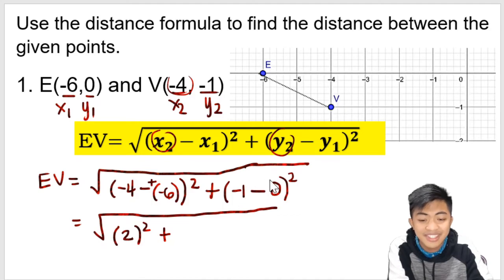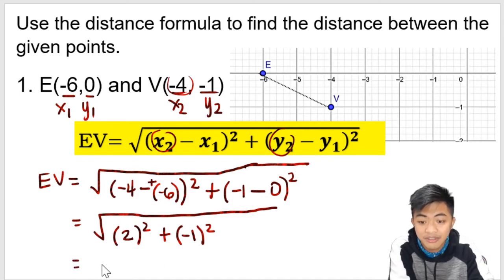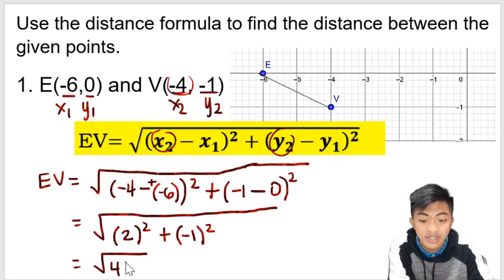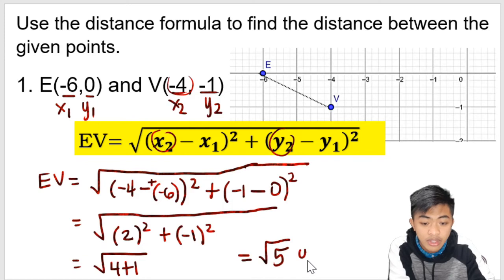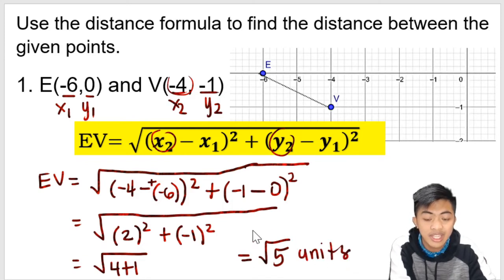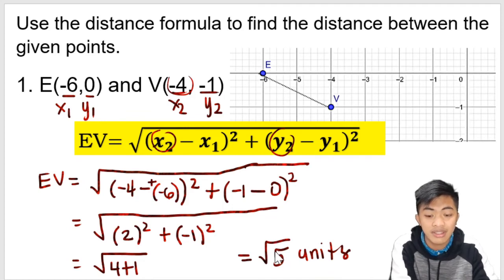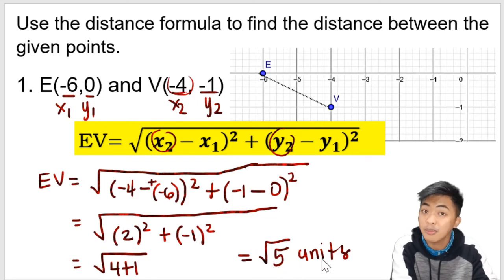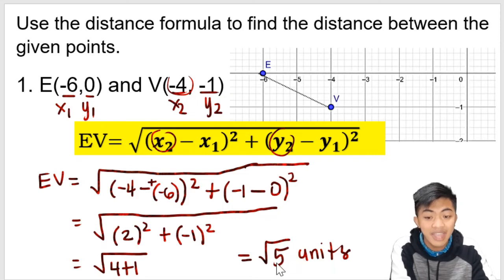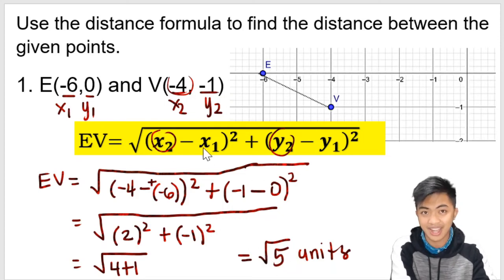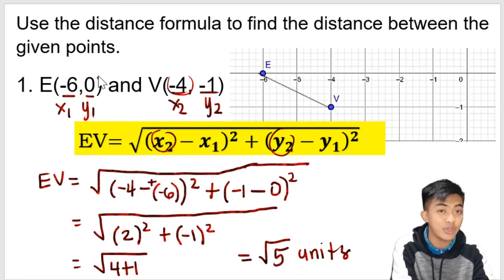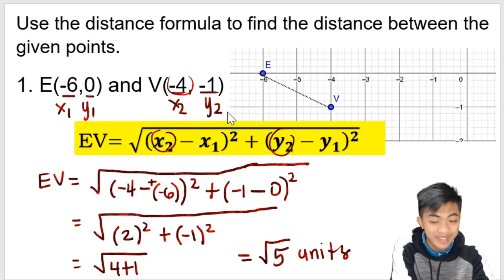Now we simplify: −4 minus −6 becomes −4 + 6 = positive 2, squared; plus −1 minus 0 = −1, squared. So 2² = 4 and (−1)² = 1, giving us 4 + 1 = 5 under the square root. The final answer is √5 units, which is approximately 2-point-something. That is how we use the distance formula to determine the distance between two points.